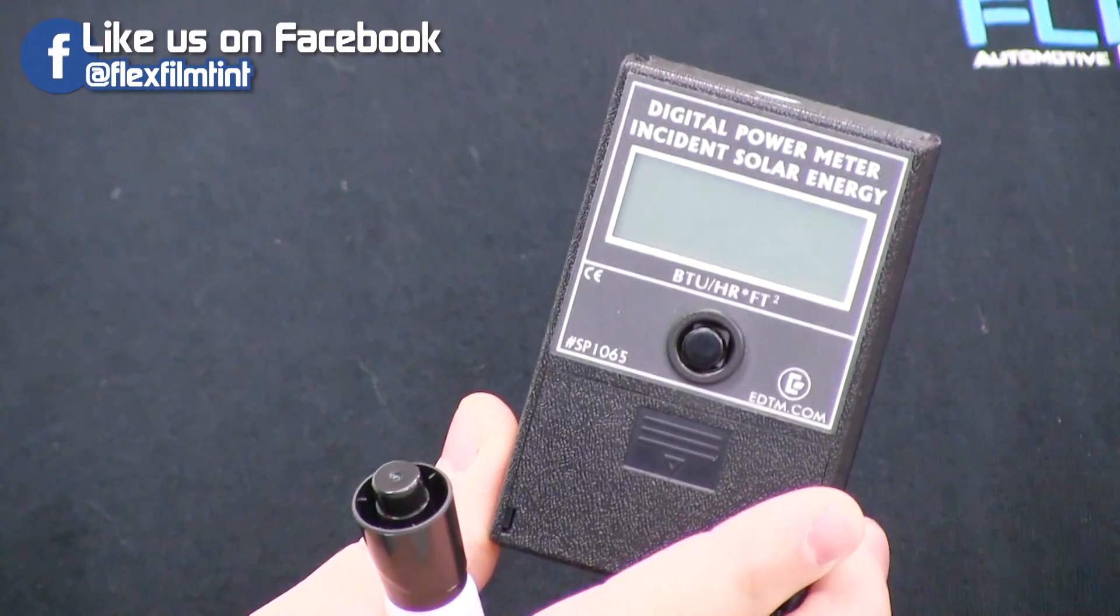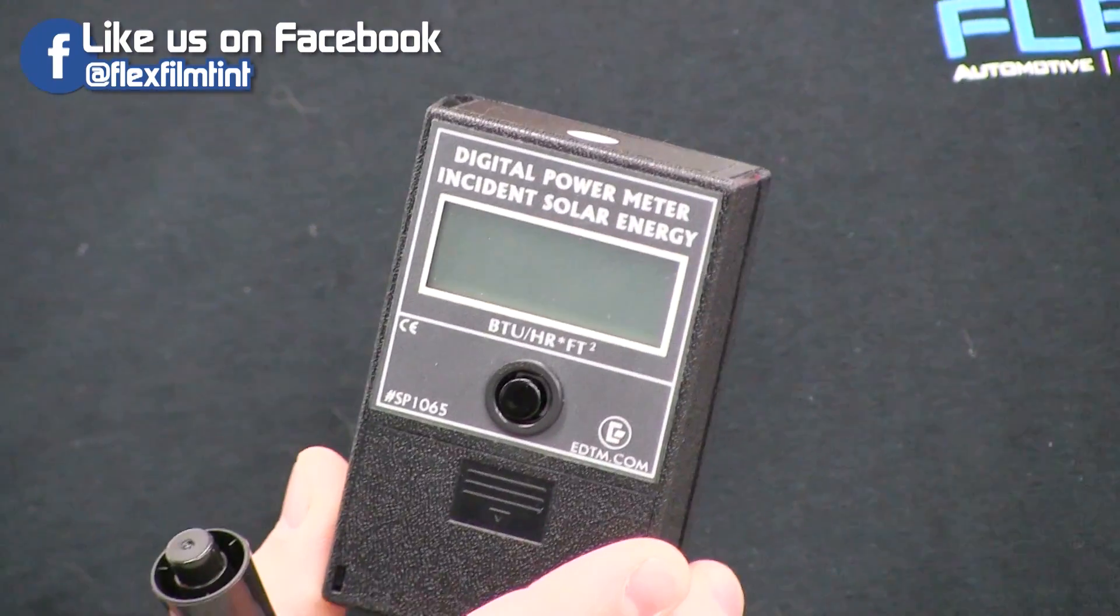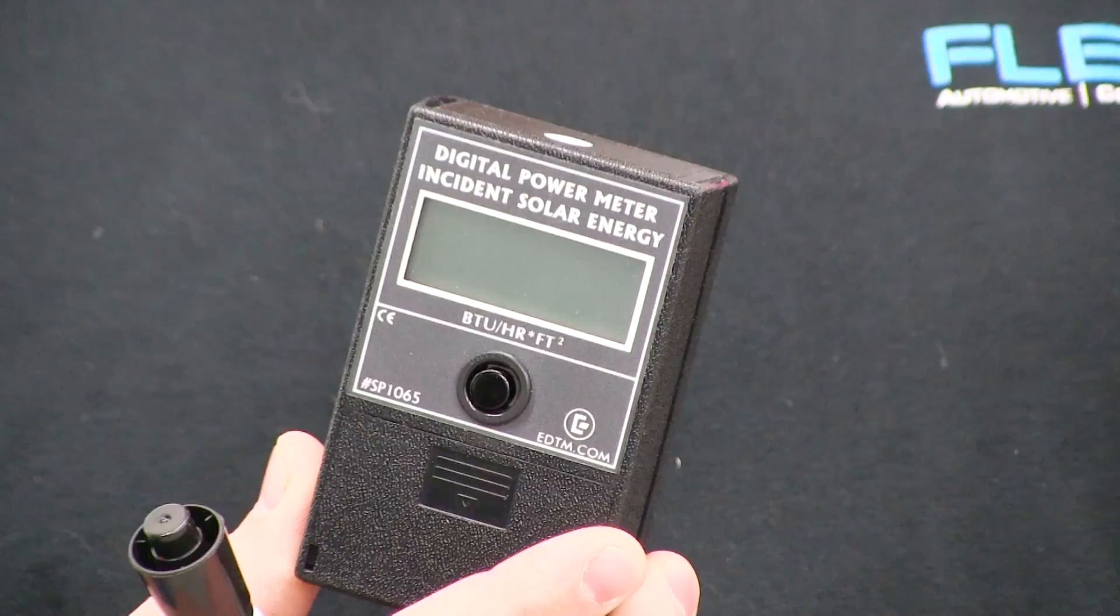This meter is a BTU meter, which BTU stands for British Thermal Unit. And a British Thermal Unit is a traditional unit of heat that will heat up one pound of water one degree. That's all it is.